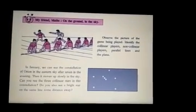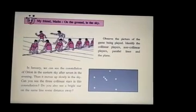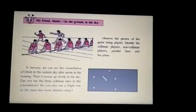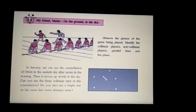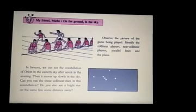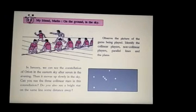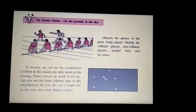Now, my friend marks on the ground in the sky. This is the figure from your book. Observe the picture of the game being played. Identify the collinear players, non-collinear players, parallel lines and plane. If you look at this picture very carefully, all the players which are sitting on one line are examples of collinear pairs. Those players which are running are non-collinear players. The lines on which the players are sitting are examples of parallel lines, and the plane where these lines are drawn is the example of the plane.